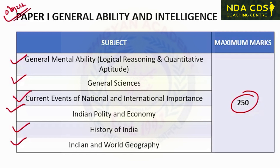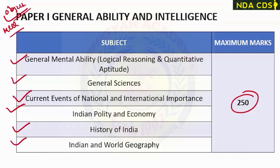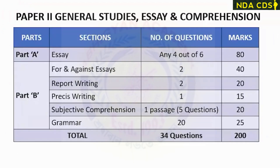Paper 2 is a subjective type paper with questions on debate writing, report writing, comprehension, precise writing, and other communication and language skills. Here you need to write the answers not in the OMR sheet but in the answer sheet that will be provided in the examination hall.